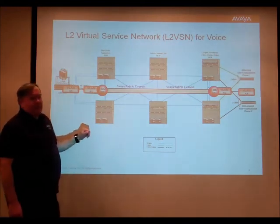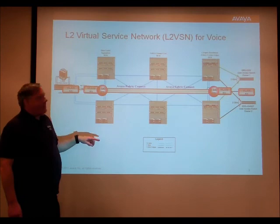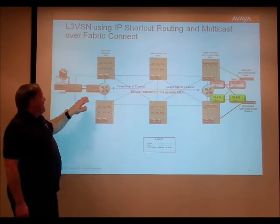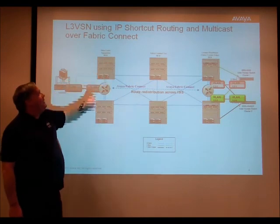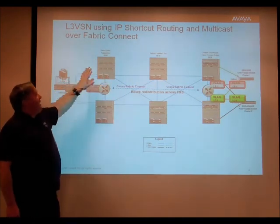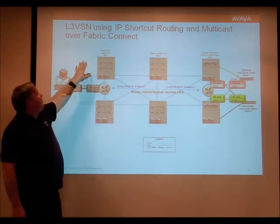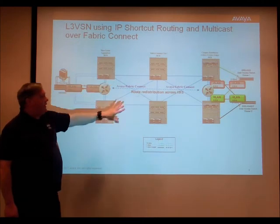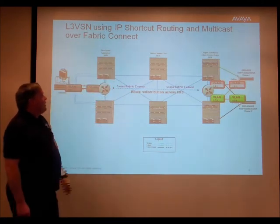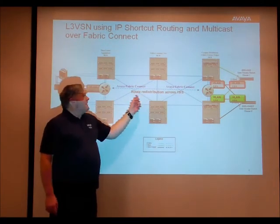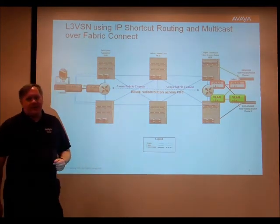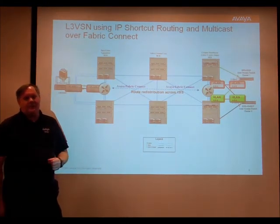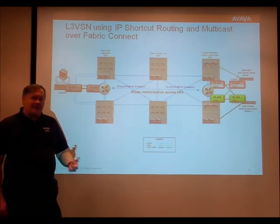Our other part of the demonstration on the next slide is we're using layer 3 VSNs or IP shortcut routing, and we're also doing multicast over our Fabric Connect. So what we're using is ISIS to do route redistribution. ISIS, much like OSPF — actually predates OSPF — is a link state database type technology.